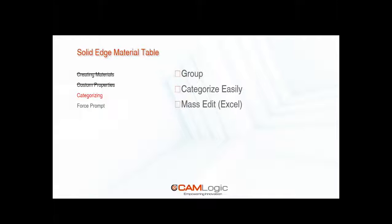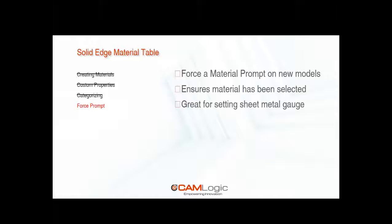Categorizing. Within the library you can group and categorize quite easily from within Solid Edge, but again that Excel spreadsheet is really handy for doing mass edits of a lot of materials at the same time. Another really cool thing you can do to save yourself time is you can actually force a material prompt when you create new models. This ensures that a material has been selected, and it's great when you're doing sheet metal because you can set the gauge immediately.